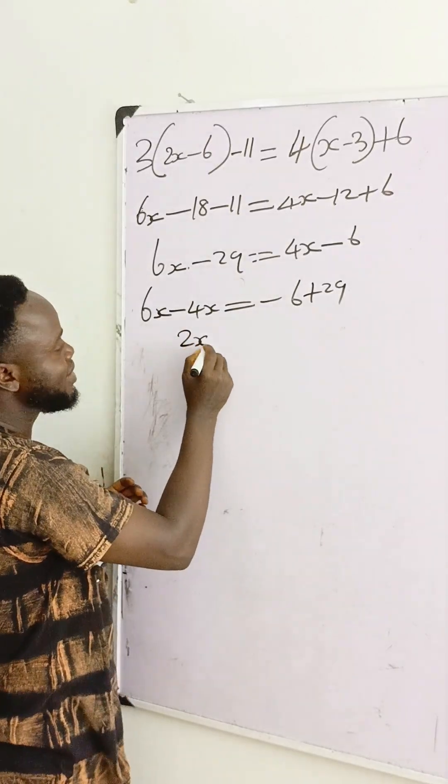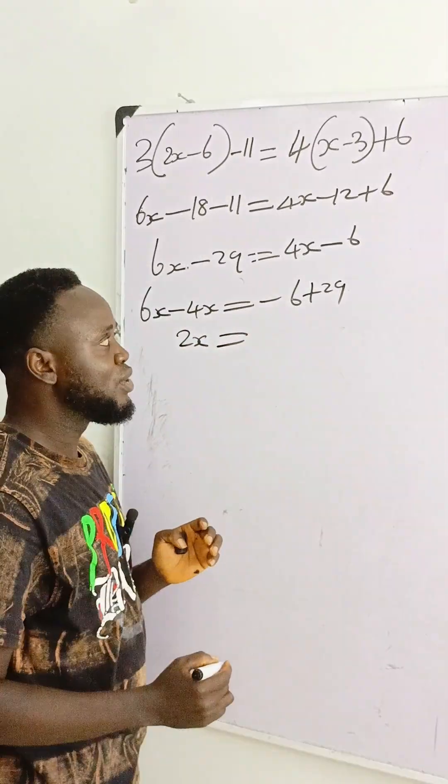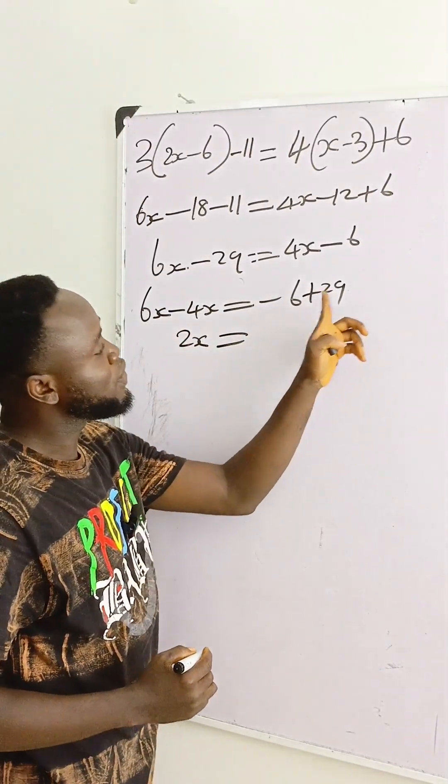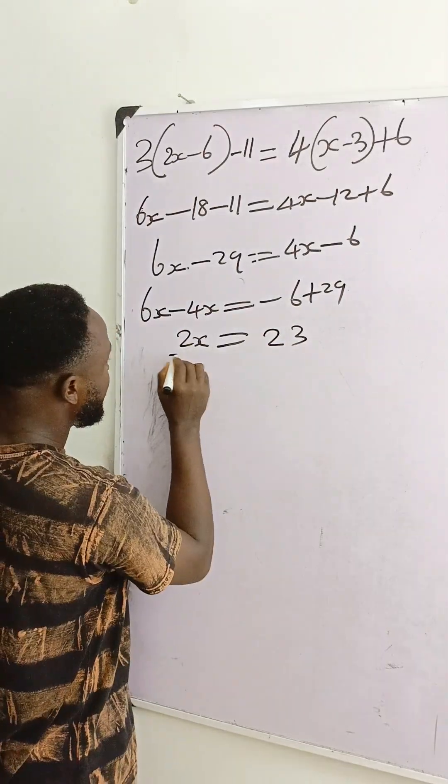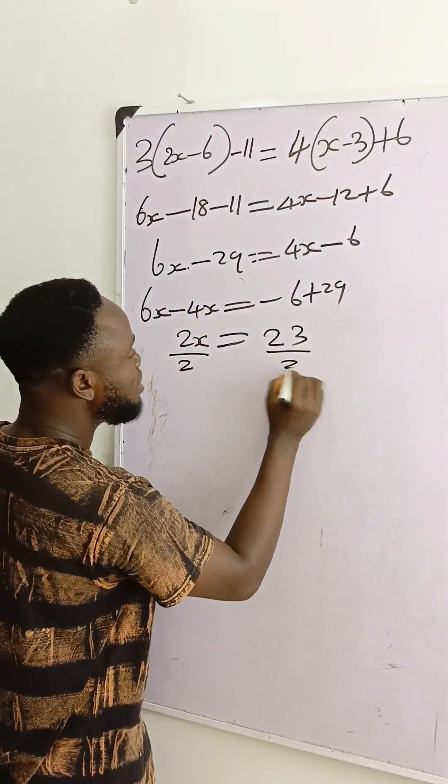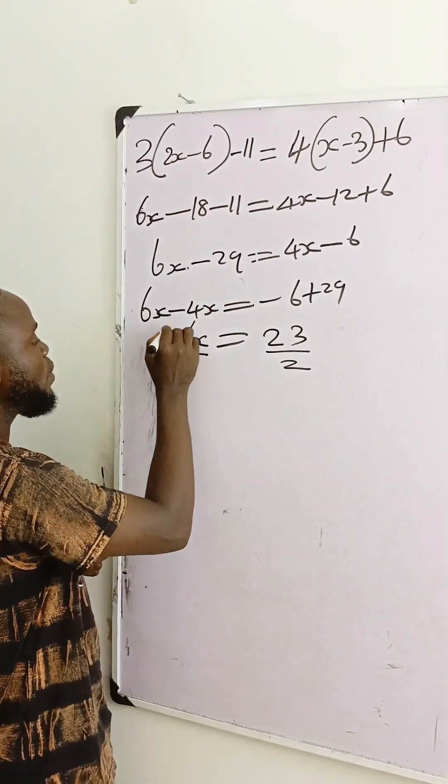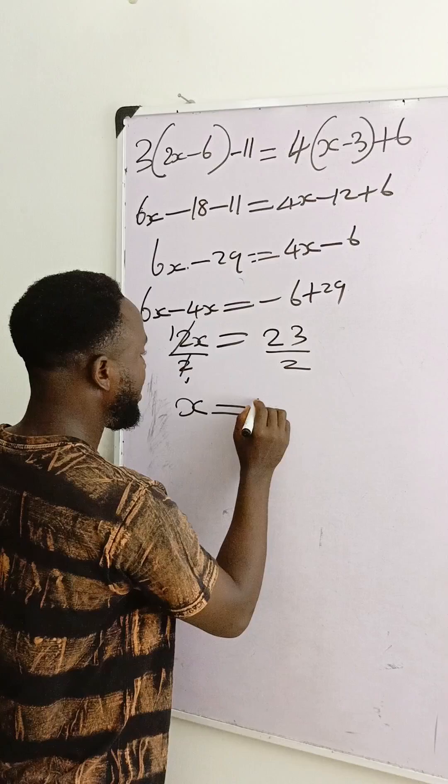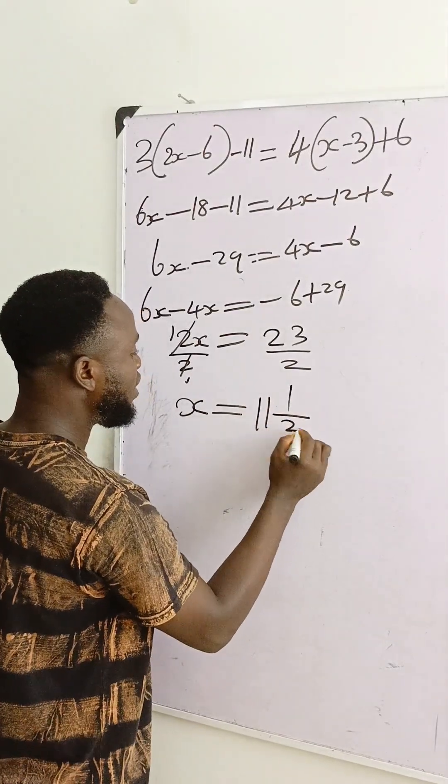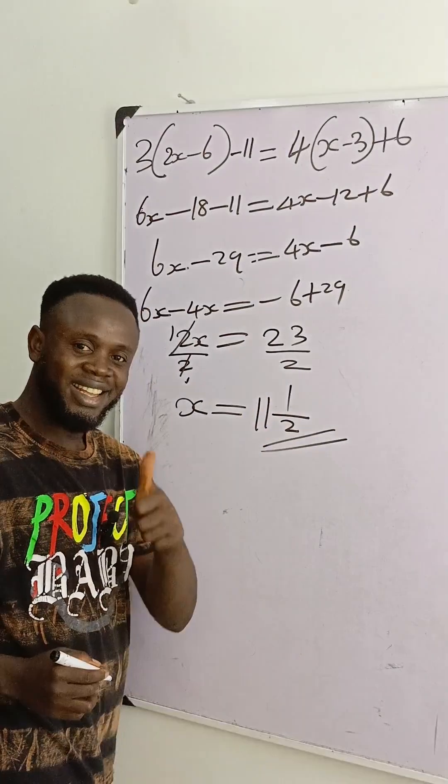Then 6x minus 4x is 2x. This equals minus 6 plus 29, which is 23. Divide both sides by 2. 2 divides into 23 giving 11 and 1 over 2 as the final answer. Thank you.